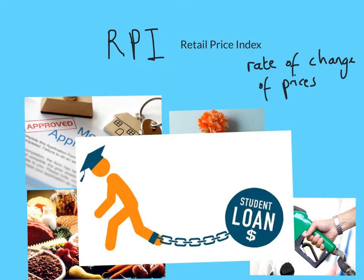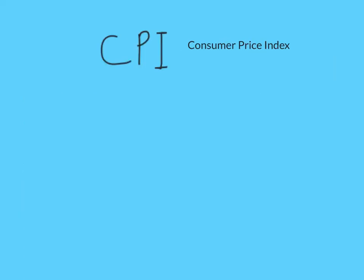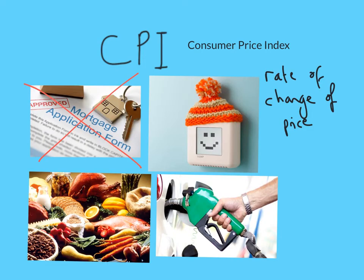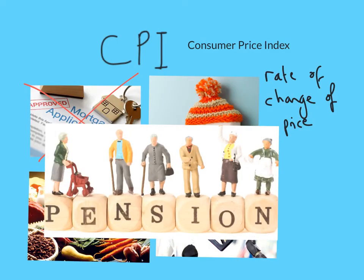We're also going to look at the CPI and then compare them. The CPI is the Consumer Price Index, and it also measures the rates of change in price of everyday life items. The government uses this to update state benefits and pensions every year.